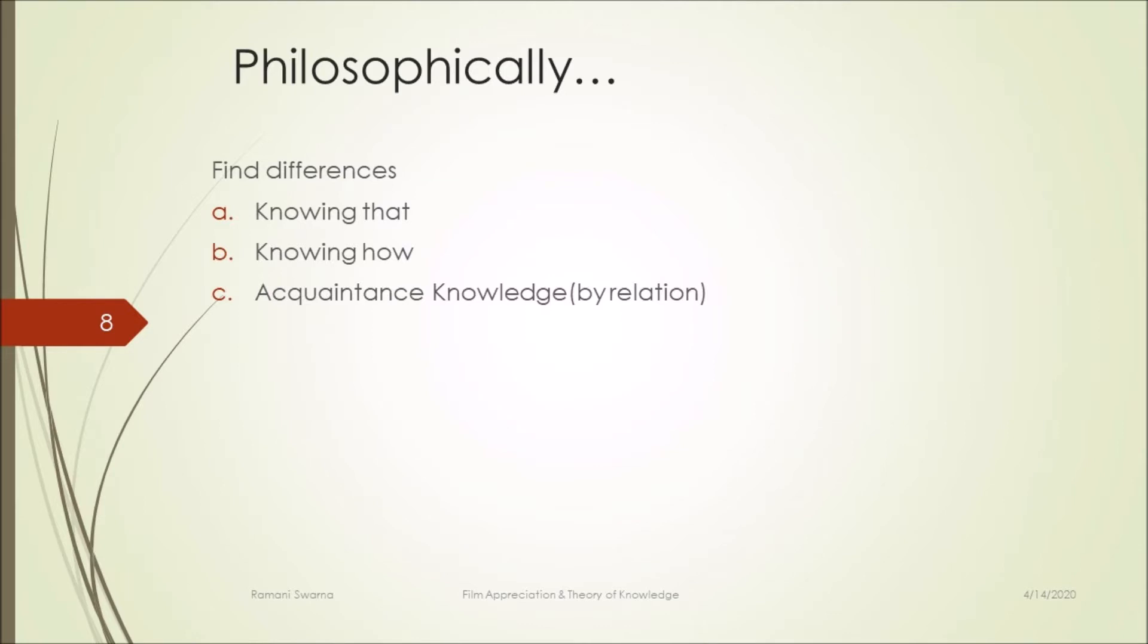Especially in the domain of epistemology, there are three main things present for you. Number one, knowing that. You can include even knowing this. Knowing that - how would you interpret it? Knowing that means it is separated from you.